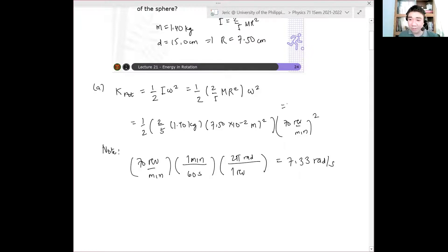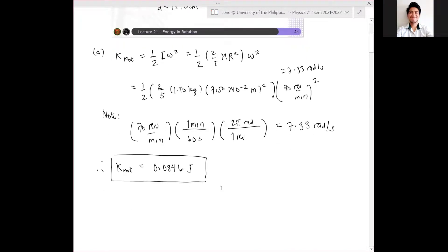And therefore this is equal to 7.33 rad per second. And when you calculate it, the rotational kinetic energy is about 0.0846 joules. That's your answer. You understand how to do it? Calculator work for part A. Okay? Any questions?